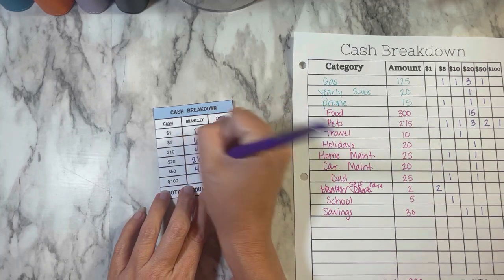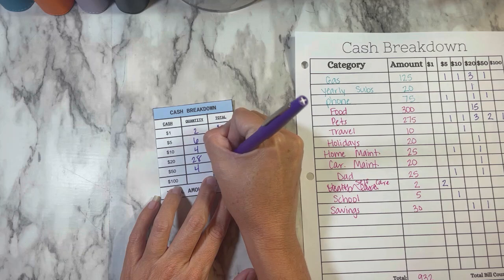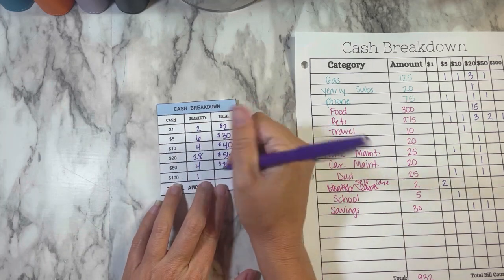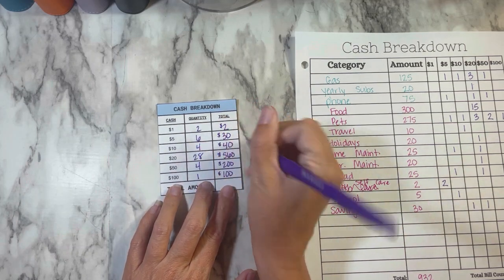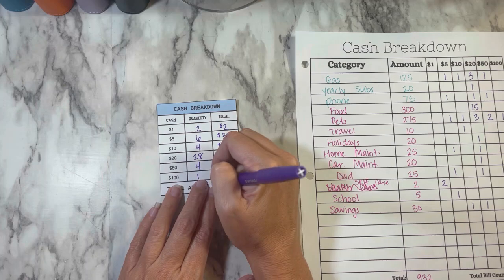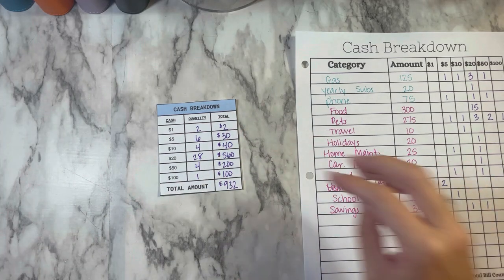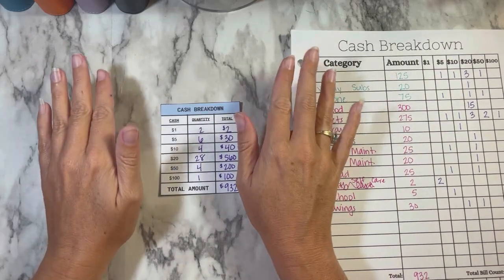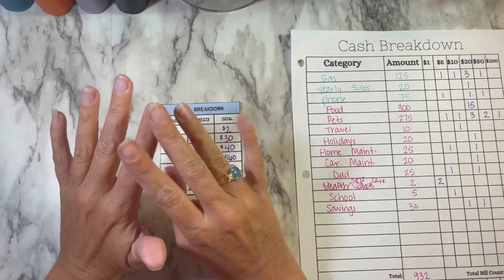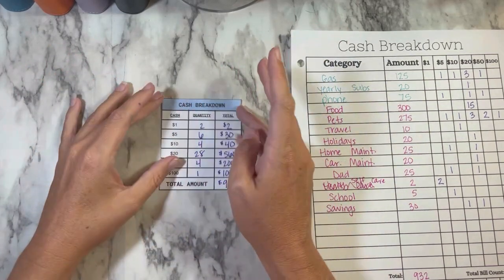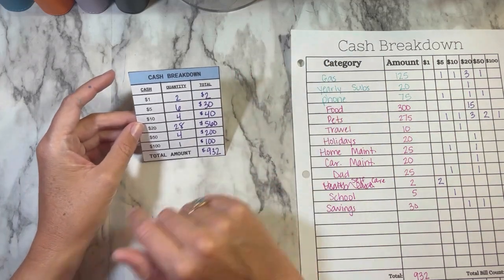Which is $560. Four $50s and one $100, which is $932. When I get paid, this is Wednesday that I'm filming this, Wednesday the 21st I believe, and I get paid on Friday the 23rd.